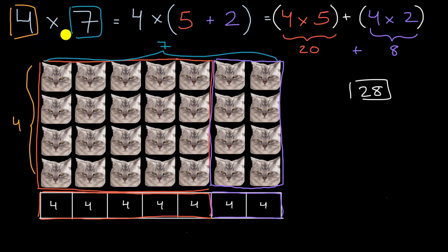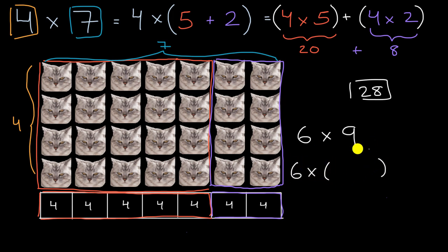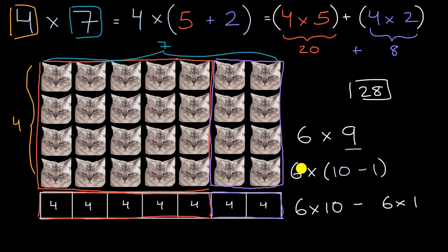The big picture is: even if you're not dealing with four times seven or angry cats — and in most of our lives we try to avoid angry cats — there might be a way to break down the numbers you're multiplying into ones you're more familiar with. For example, what is six times nine? Well, maybe you know six times ten and six times one. You could rewrite nine as ten minus one, so six times nine equals six times (ten minus one), which equals six times ten minus six times one. That's the distributive property.